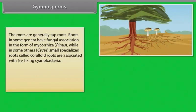The roots are generally tap roots. Roots in some genera have fungal association in the form of Mycorrhiza, like Pinus, while in some others like Cycas, small specialized roots called Coraloid roots are associated with N2 fixing Cyanobacteria.